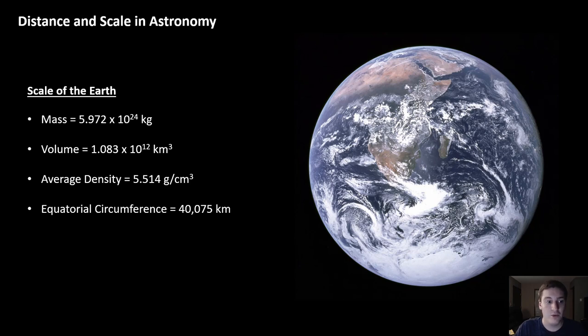Planet Earth is 5.972 sextillion kilograms in mass. That's huge. Its volume is 1.083 times 10 to the 12th cubic kilometers. Its average density, because it's a rocky world, is a pretty dense 5.514 grams per cubic centimeter. And its equatorial circumference is 40,075 kilometers.